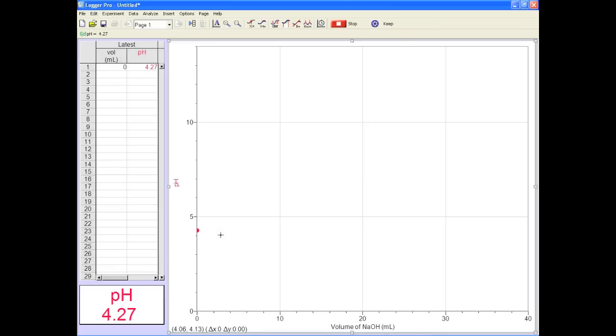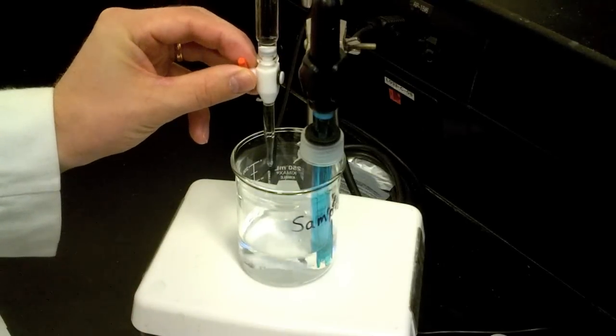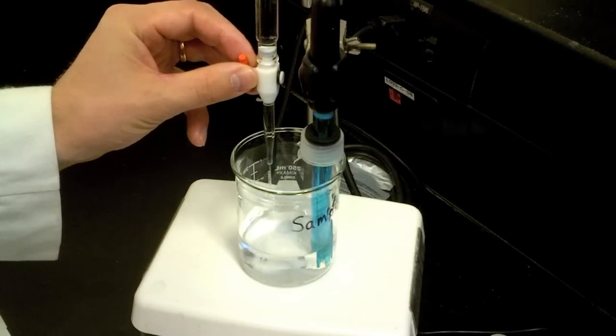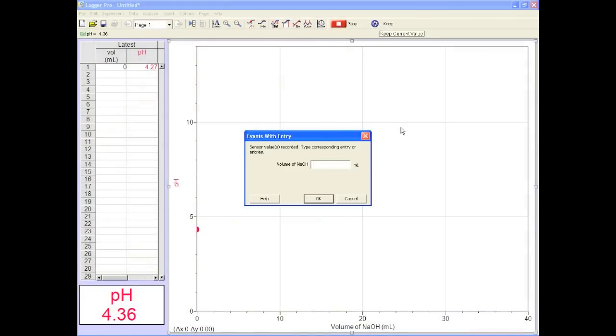Right. Now add some titrant, maybe a mil or so, but make sure you know the exact amount to two decimal places. Check out the pH as you add titrant, you don't want it to freak out on you when you don't expect it. Press keep again and enter the amount of titrant you added.